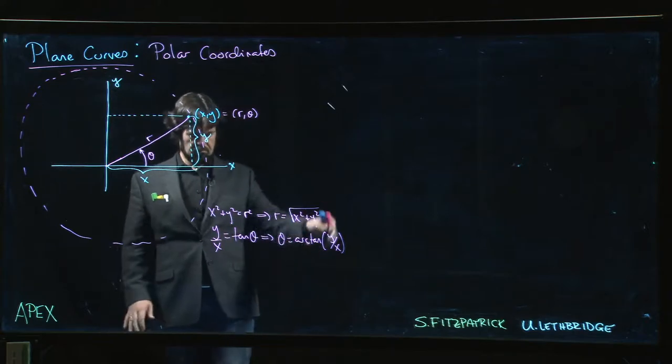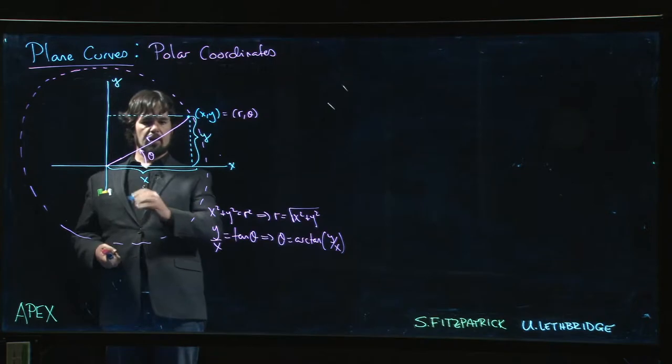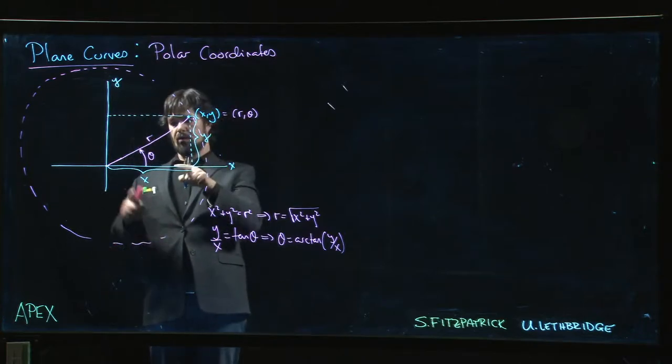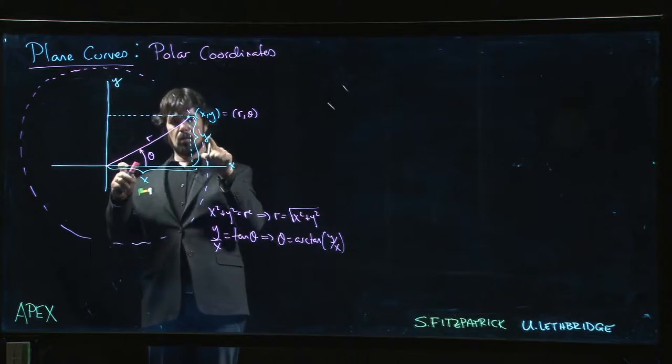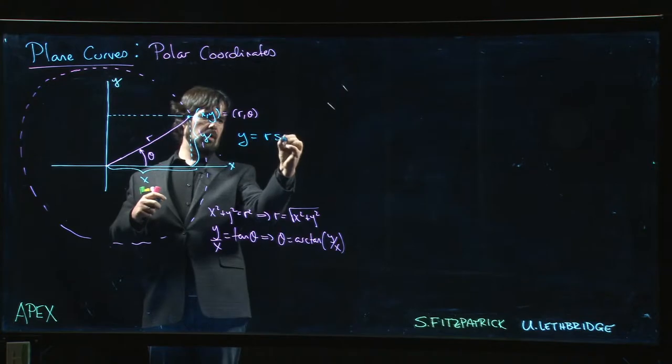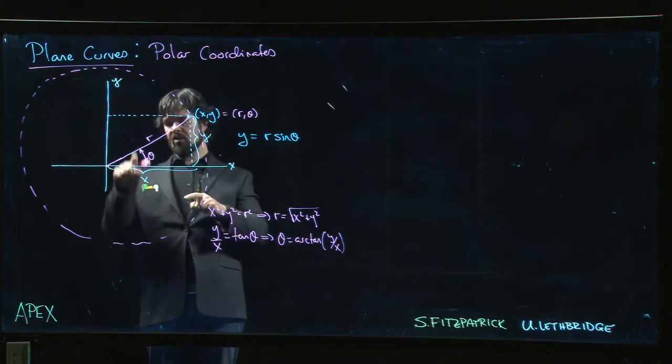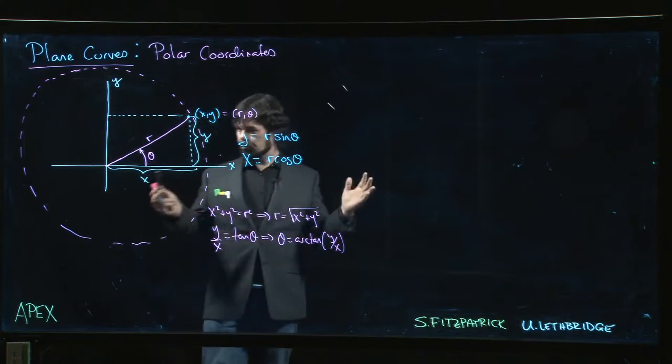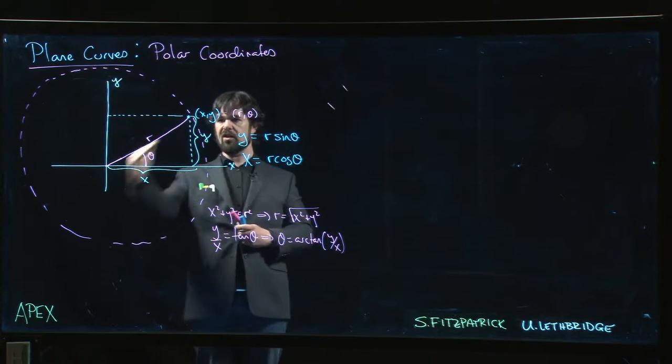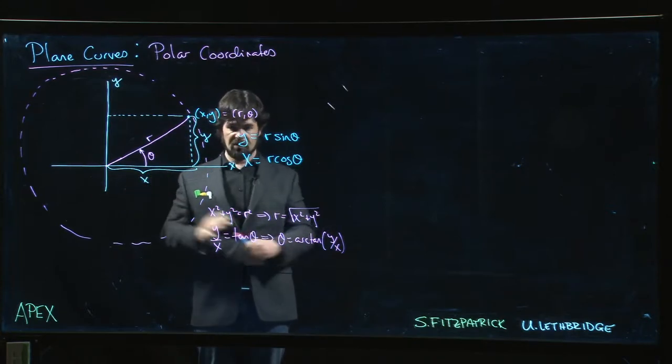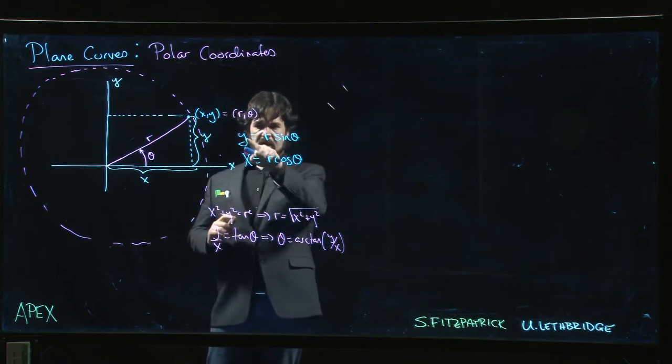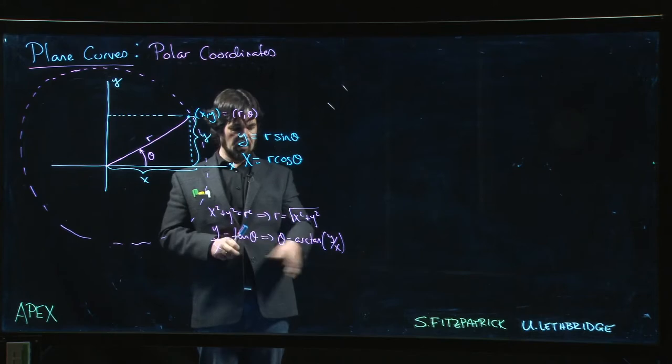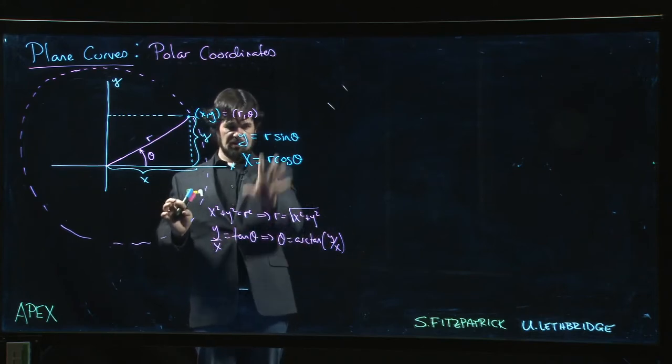We can go the other way. Look at this right angle triangle: this side is x, this side is y. From the right angle triangle, sine theta is opposite over hypotenuse, y over r is sine theta, or y equals r sine theta. Cosine theta is adjacent over hypotenuse, x over r is cosine theta, or x equals r cosine theta. So this is the polar coordinate system in a nutshell: we give a direction and a distance rather than two distances. We know how to convert - if we have r and theta we can get x and y, and if we have x and y we can get r and theta.